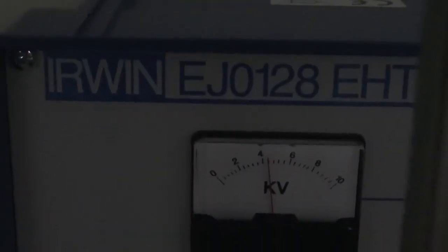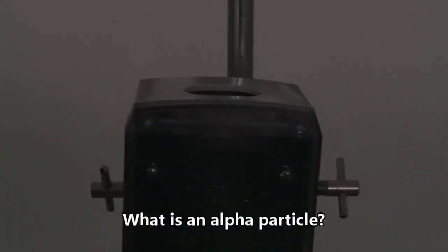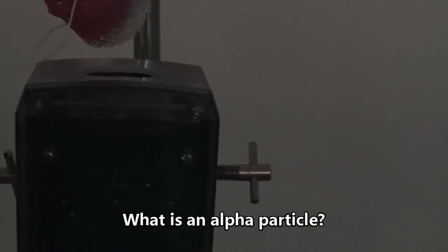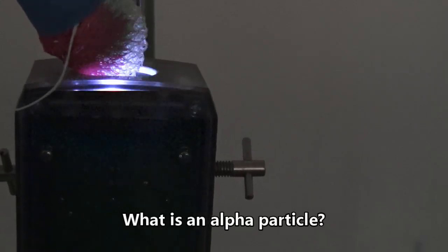Here we have a spark detector connected to an EHT. The potential is roughly 4000 volts. And as you can see we see no sparks. I'm going to bring an alpha source very close to the window of the spark detector. This is just a gas mantle. All styled which were radioactive. And there we go.